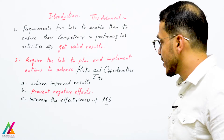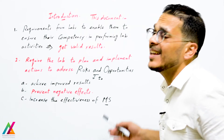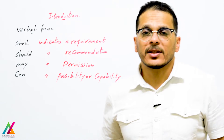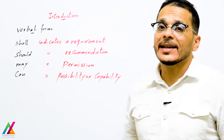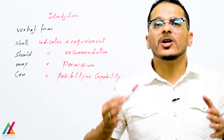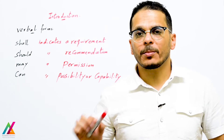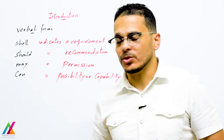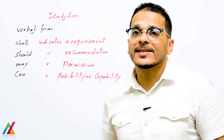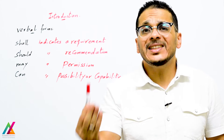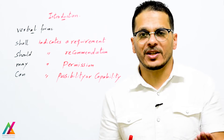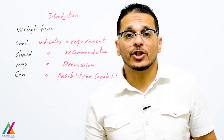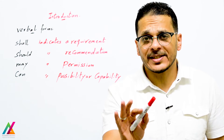There are some verbal forms used in this document. 'Shall' indicates a requirement — it is mandatory, you have to do it; for example, 'you shall prepare a procedure' means you have no other option. 'Should' indicates a recommendation — it is advice; if you do this it will improve something, so you should do it.